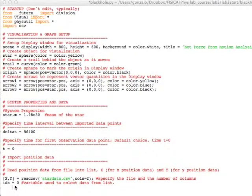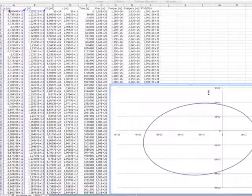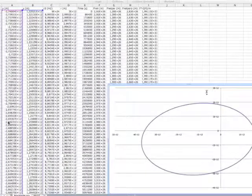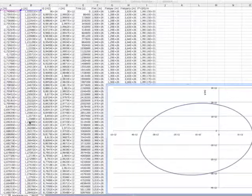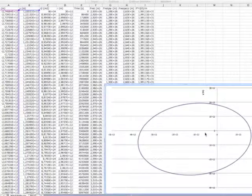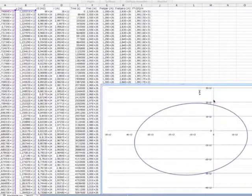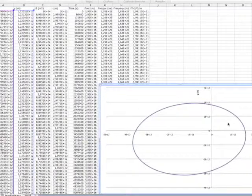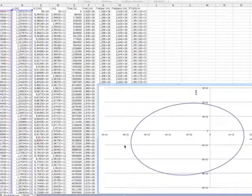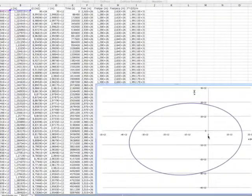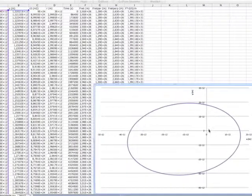Here we are going to introduce the velocity data. Here we can see the data, x and y coordinates. On the right, we can see the ellipse, which is the trajectory that describes the star around the black hole at the origin.